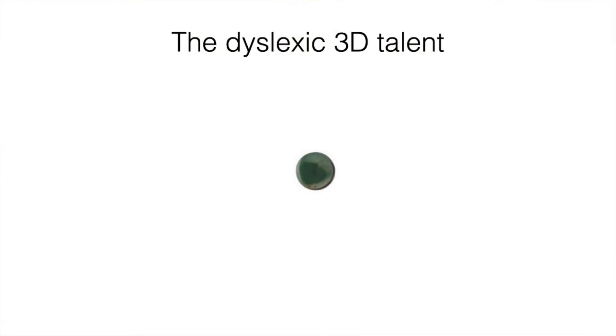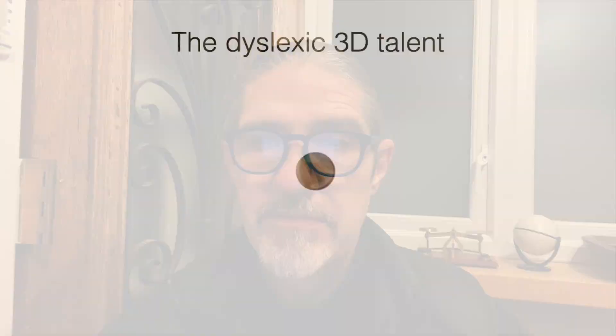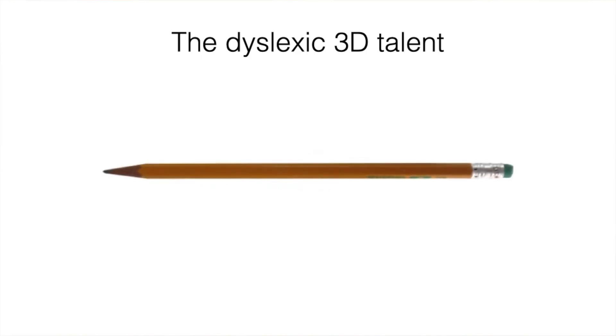Let's have a look at this one. This is a genuine photograph that I took. I cleared away everything around it that could give you clues about what it is. Have a think — what could this be? It could be a lot of different things. I'm hoping that you are confused about what this is. Because if you were able to see it from a different angle, do you think that could clear up your confusion? Let's find out. Is the confusion gone? That's what the dyslexic 3D talent does.